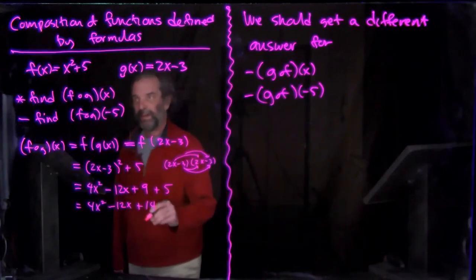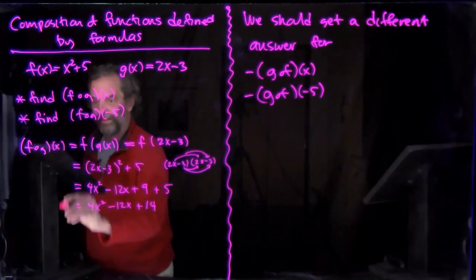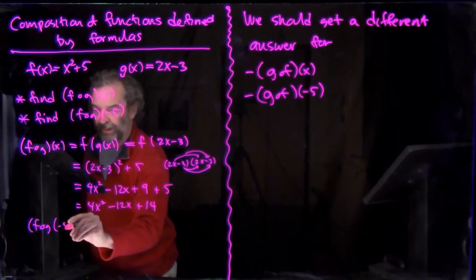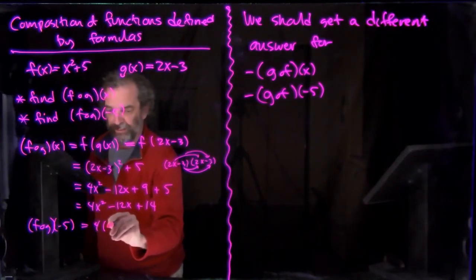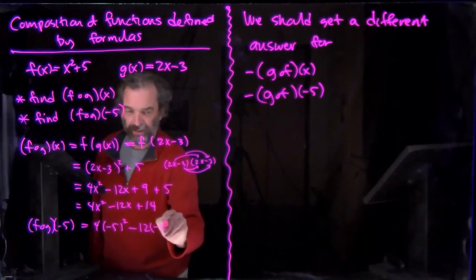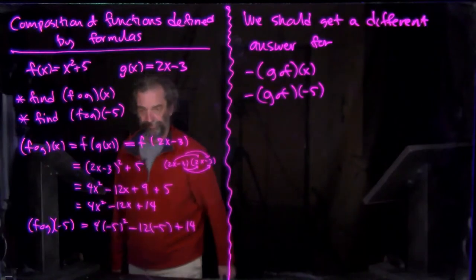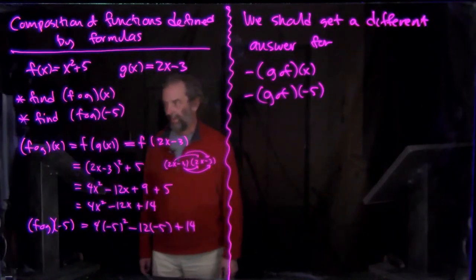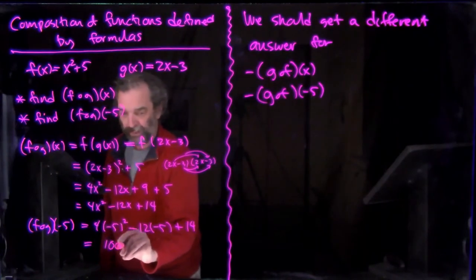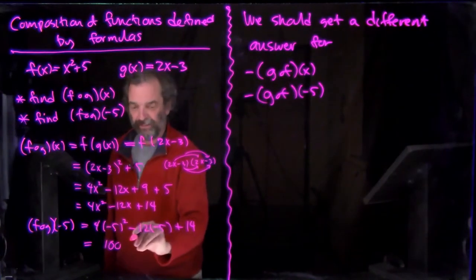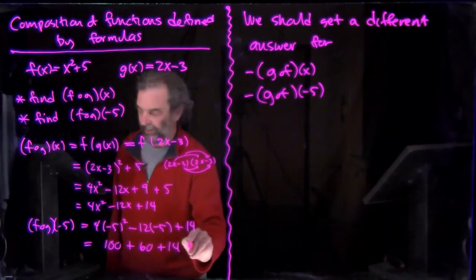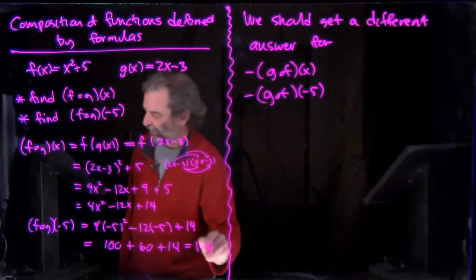And then we'll put in -5. Here we go. f composed with g at -5. 4 times (-5)² minus 12 times -5 plus 14. So -5 squared is 25, and times 4 is 100. And -12 times -5 is 60. So it looks like, I'm checking it, 174 is correct.